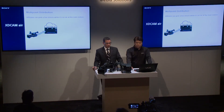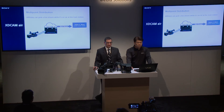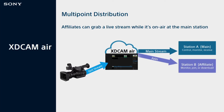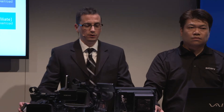We also have multipoint distribution. This allows you to stream from a single camcorder to multiple stations at the same time. For example, a photographer at the scene of a hurricane — the first station takes that to air, and affiliate stations may want to later join that live stream. They have the ability to connect via our cloud service, Exicam Air, and join into that stream and start streaming that to their local stations as well. So our main station accepts the stream and multiple affiliate stations can stream the same content, all from one camcorder.